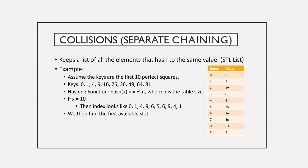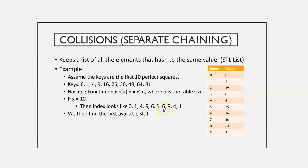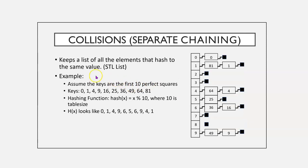Now, back to separate chaining. It keeps a list of all elements that hash to the same value. So, again, let's run through an example. Assume the keys are the first 10 perfect squares. Keys are 0, 1, 4, 9, 16, 25, etc. And if we use a hash function mod n, then the index looks like 0, 1, 4, 9, 6, 5, so forth. We then find the first available slots. Doing the same thing, we'll get a list. If we have any of the duplicates, we will have to find the next available spot. So, 1 and 81 will hash to the same spot, so we'll have to find the next available slot. Similarly, with keeping a list in separate chaining, it looks like this, where wherever we have a conflict, we'll push them onto a list.